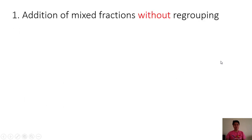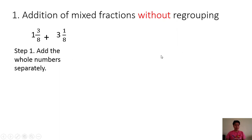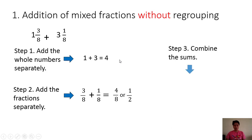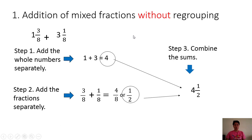Now we will proceed to addition of mixed fractions without regrouping. We will apply the general rule. We have 1 and 3/8 plus 3 and 1/8. Step 1: add the whole numbers separately — 1 plus 3 equals 4. Step 2: add the fractions separately — 3/8 plus 1/8 is 4/8, or 1/2. Step 3: combine the sums — we have 4 and 1/2. Therefore, 1 and 3/8 plus 3 and 1/8 is equal to 4 and 1/2.